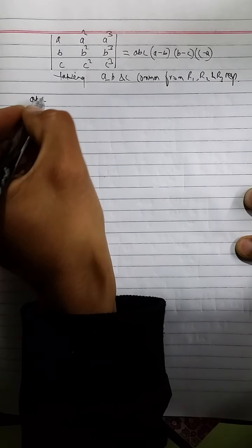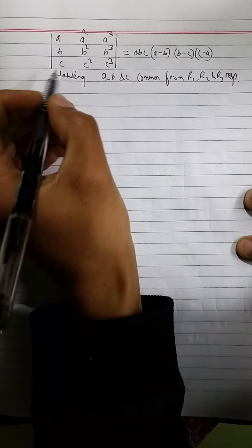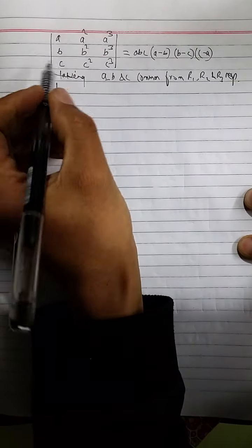So after taking A, B and C common, it remains 1, A and A square in first row, 1, B and B square in second row, 1, C and C square in the third row.